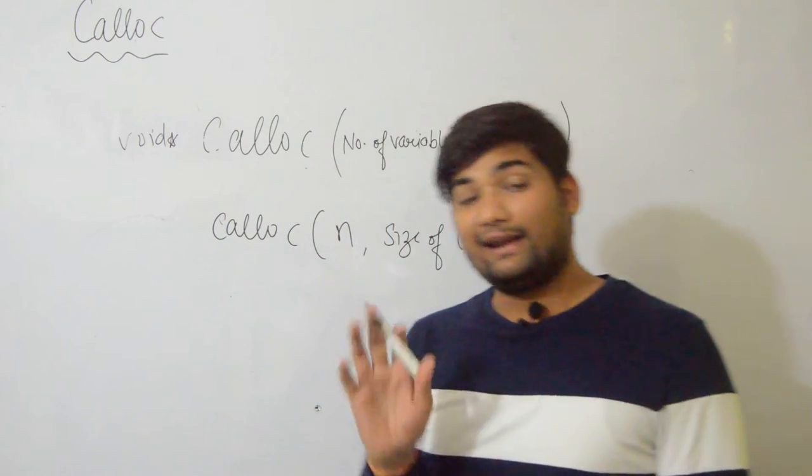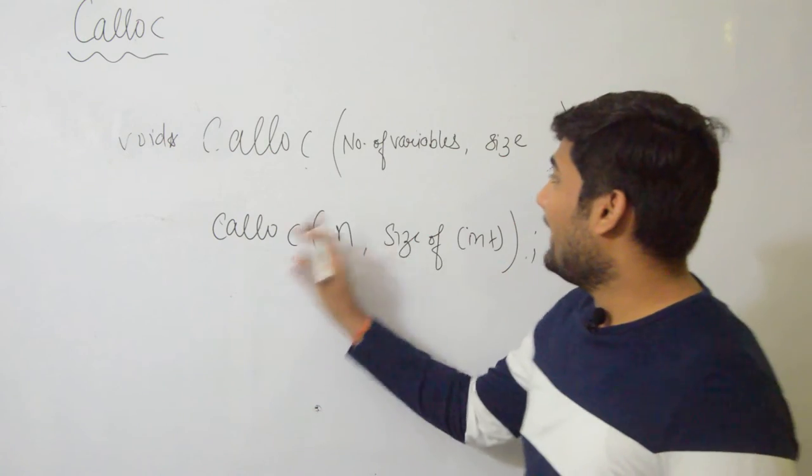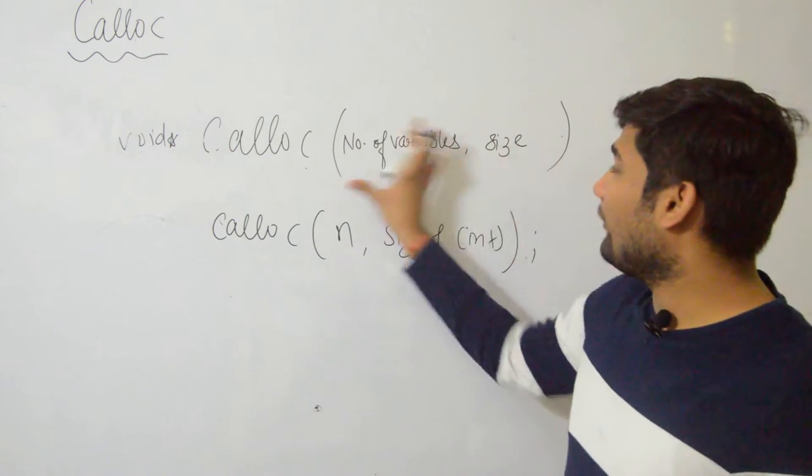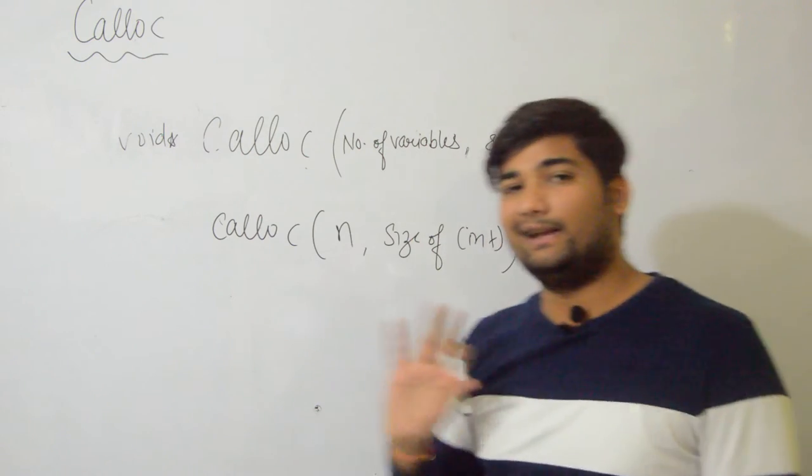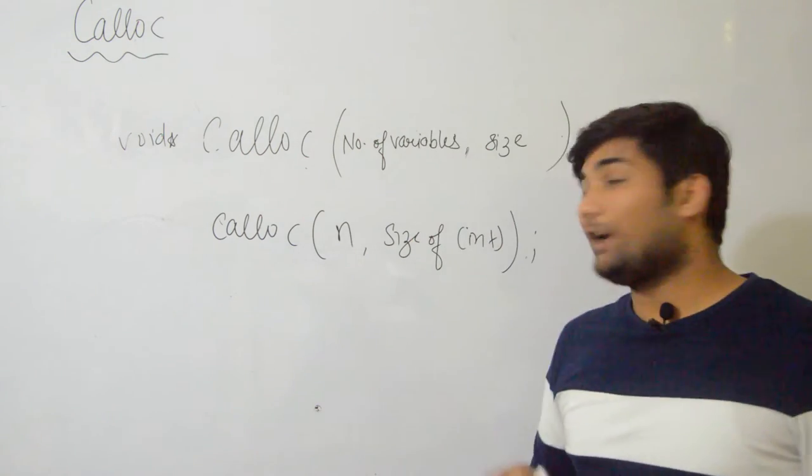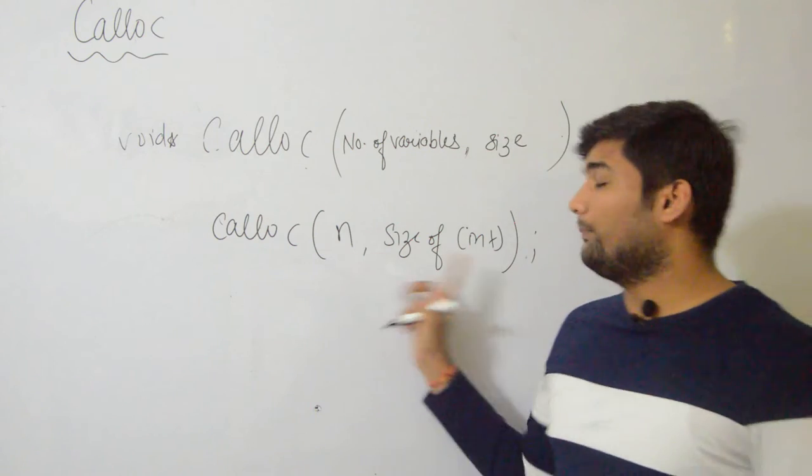Malloc's return type is void pointer, calloc's return type is also void pointer. But the difference in syntax is that malloc takes number of bytes as arguments - you pass the number of bytes in one go, no comma. While calloc has two parameters.